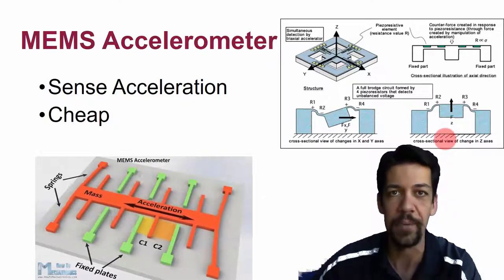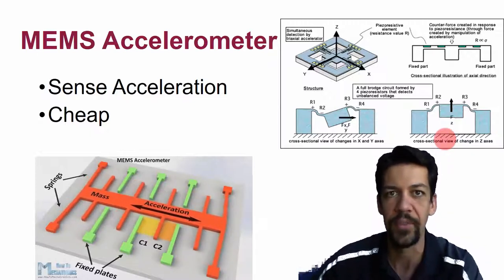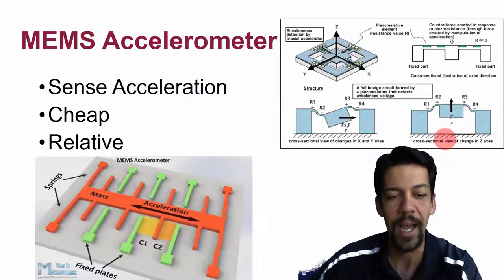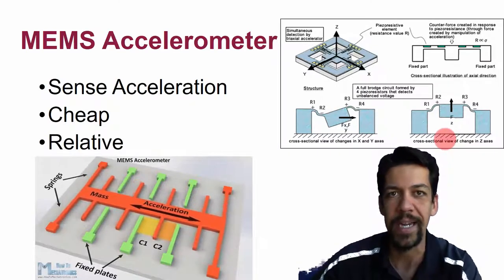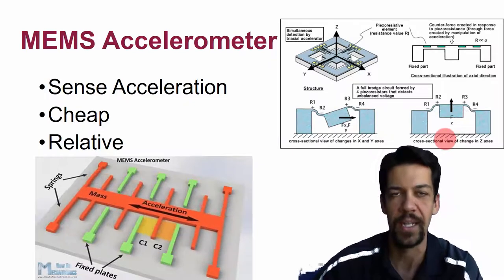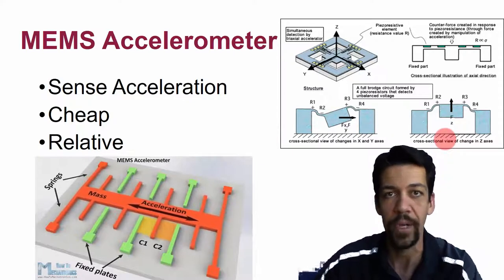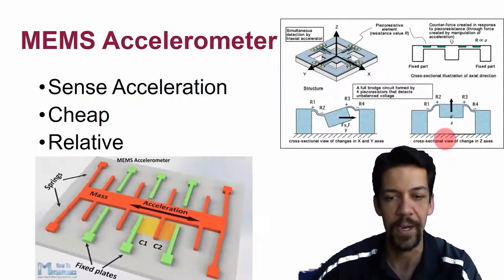They sense how much the system is accelerating in any direction at any given time. They're cheap because they've been included in cell phones and hard drives. But they only provide a relative measure. They don't give us an external reference for acceleration, only the acceleration in the frame that is actually moving.